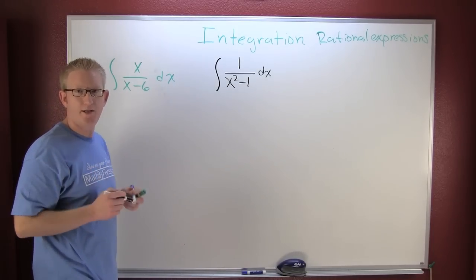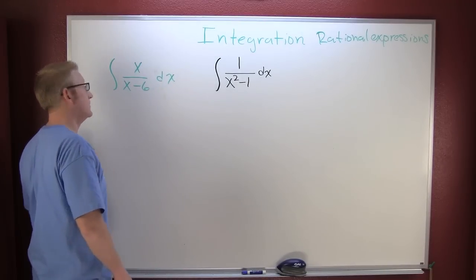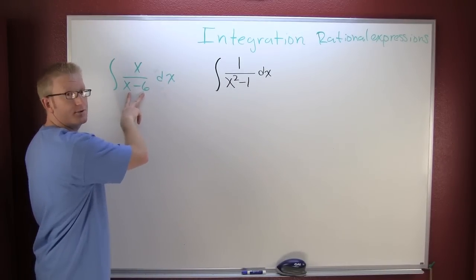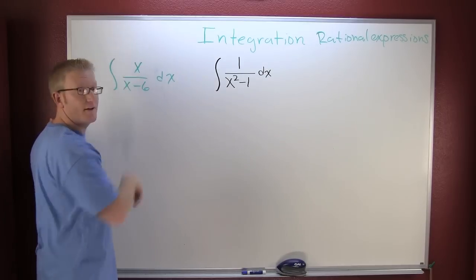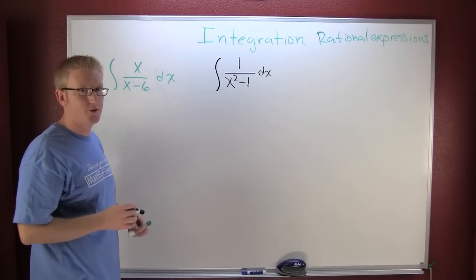We want to integrate that, so you're like maybe it's a little u-substitution. I'm like, no sir, right? Because if you let that be u, then du is going to be dx, and you still have that x on top. And the other way around too.